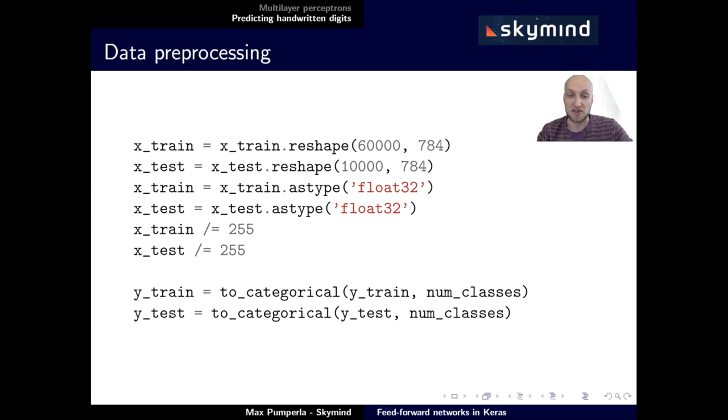As a last step in preprocessing, we're going to one-hot encode the labels that we have with our function to_categorical. That means, for instance, if we have a label with the number 0 on it, with the digit 0, this is going to be transformed into a vector of length 10, that has all 0s but a 1 at the first place.